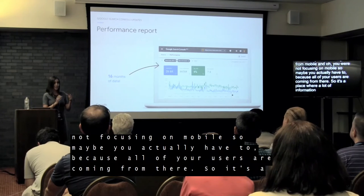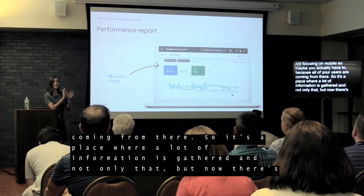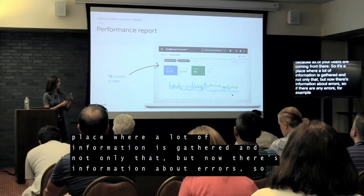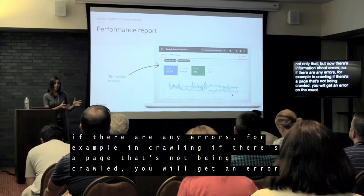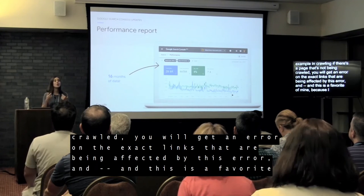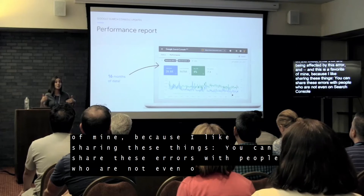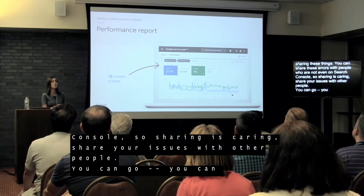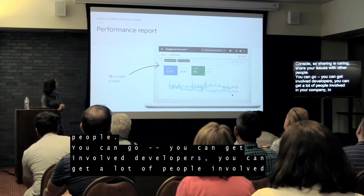Not only that, but there's now detailed information about errors — for example, if a page isn't being crawled, you get an error showing the exact links affected. And one of my favorites: you can share these errors with people who aren't even on Search Console. So sharing is caring — you can get developers and other people in your company involved. If you're on WordPress, it's very easy to get your site verified with Search Console.